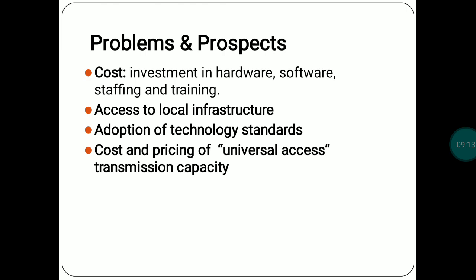There are some technical issues or political issues. Then cost and pricing of universal access transmission capacity. For example, in the US, how much they want to provide within the country to facilitate good network connections — but internationally, they deal with different facilities because there are tax issues and other issues, standards, and protocols to follow. So all these things create a little barrier to the network.